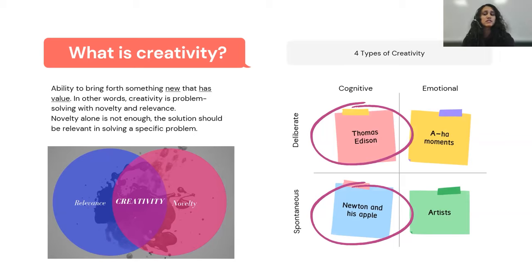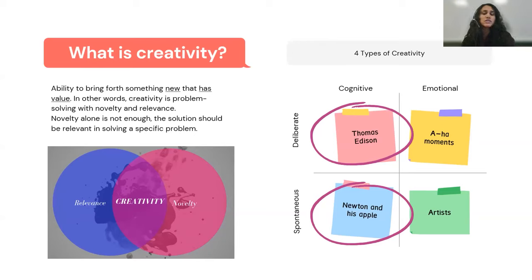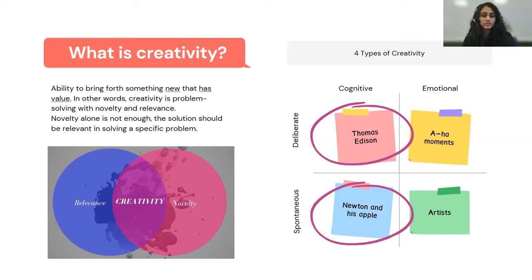Deliberate cognitive is what most scientists and problem solvers fall under. They get to innovations or solutions by deliberately working through the problems using trial and error, much like Edison did with the light bulb — he failed several times before actually inventing it. In the world of product management, think about experimentation as a great example in this category.